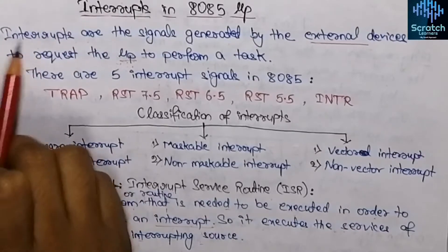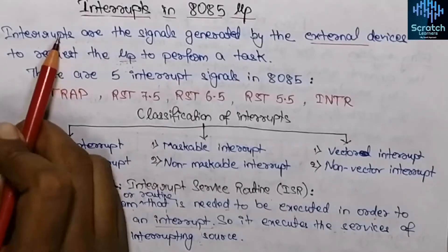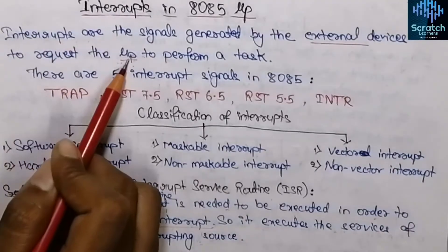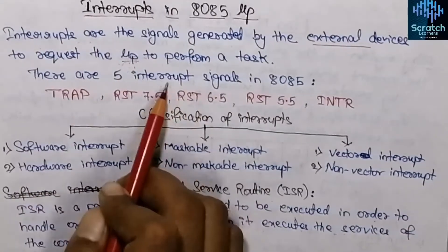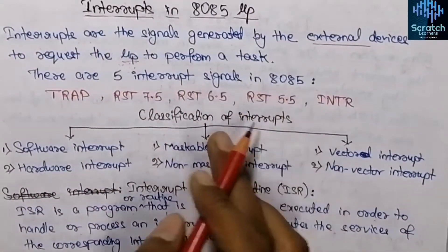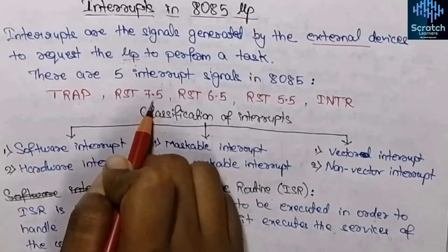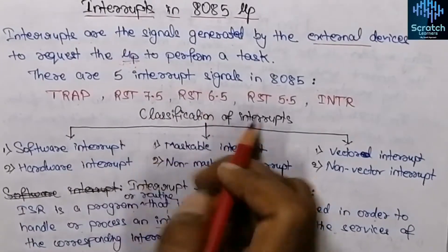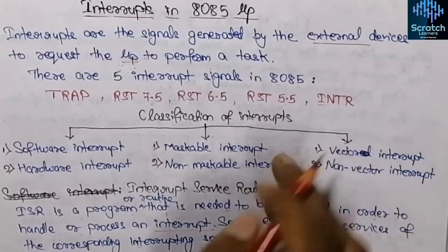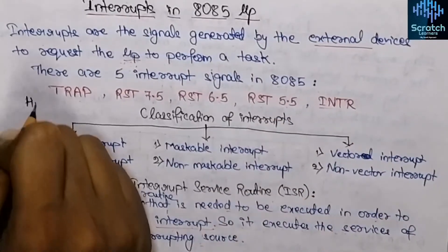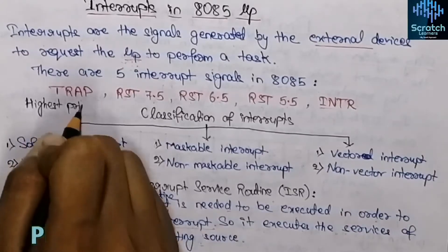When the interrupt handling is done — that means whatever instructions needed to be executed are completed — the microprocessor again resumes its incomplete task. There are mainly five interrupt signals in the 8085: the first one is TRAP, then RST 7.5, RST 6.5, RST 5.5, and INTR. Among these five interrupts, the highest priority is for TRAP and the lowest priority is for the INTR signal.